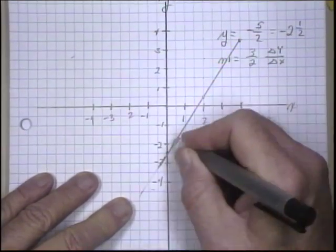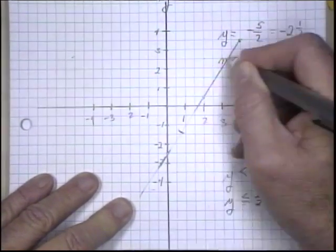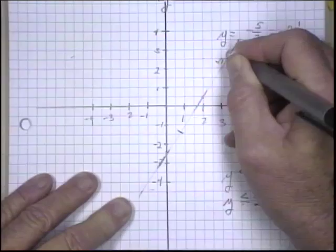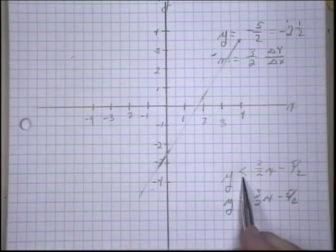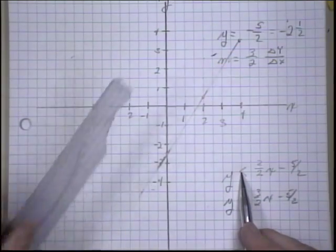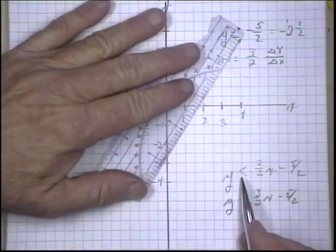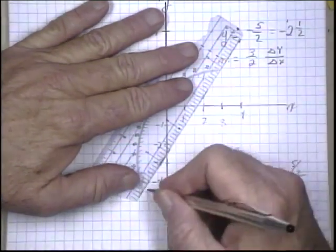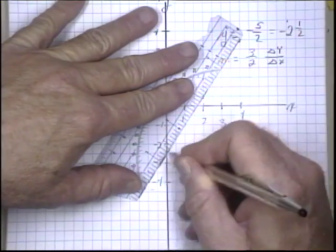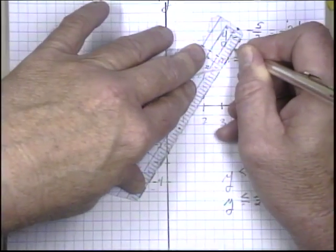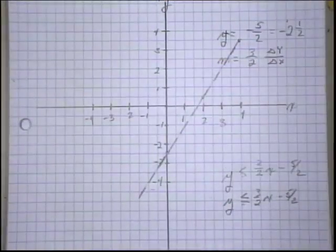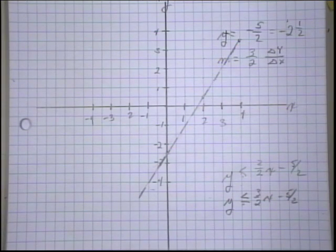So the correct way to graph this, and I should have mentioned this during our last lesson, to show an inequality that's not equal, we use dashed lines. And that tells us that the actual values located along this line are not part of the inequality.